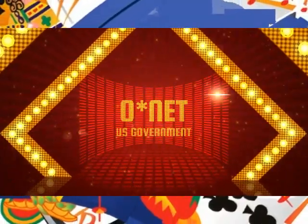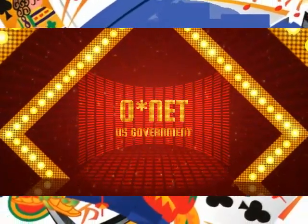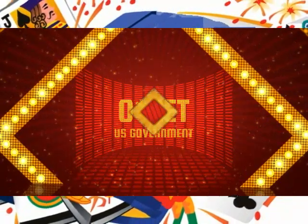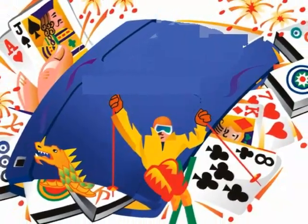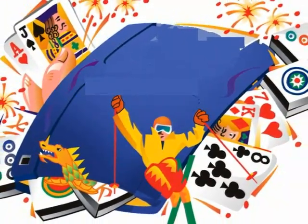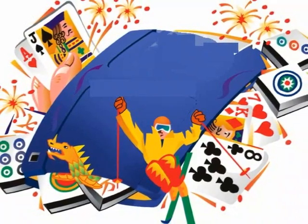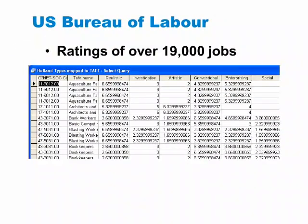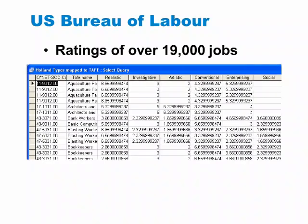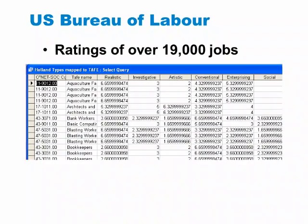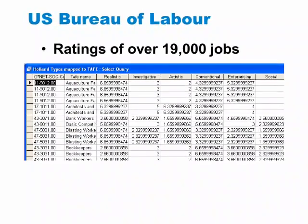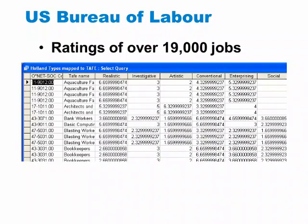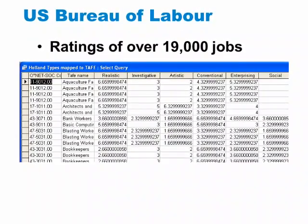The United States government offers a free service to help us do just that. The O-Net is an online listing of characteristics of thousands of jobs. This project was started years ago as the U.S. Bureau of Labor's Dictionary of Occupational Titles. Around 30,000 job titles had each been rated according to the skills required for the job and how the job matched people's interests.